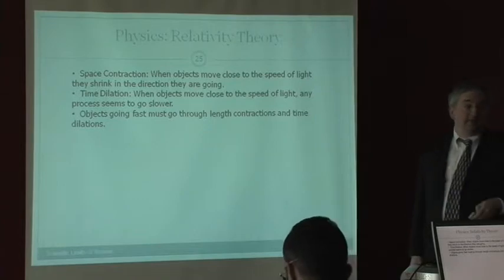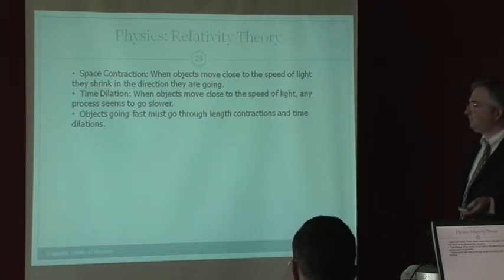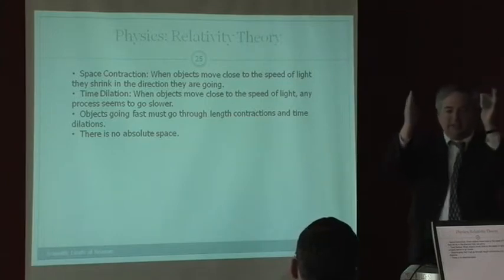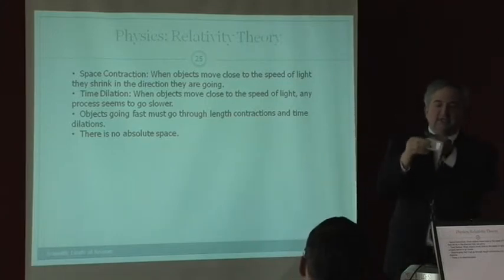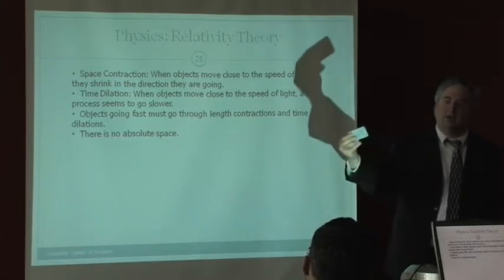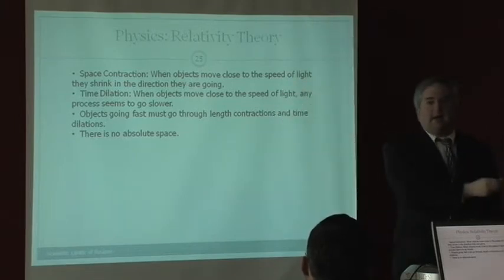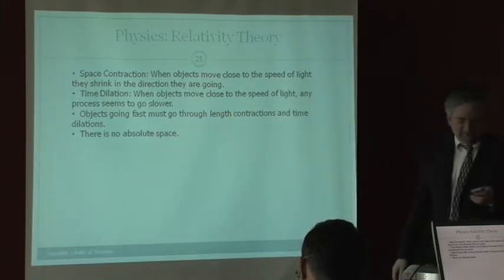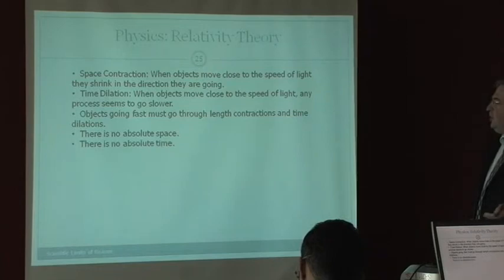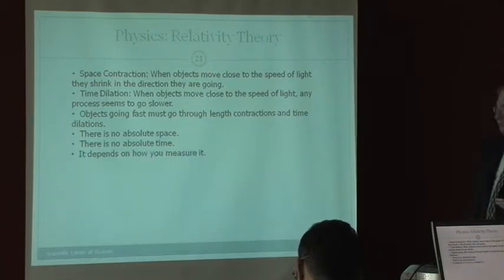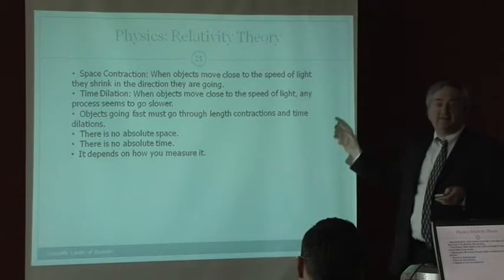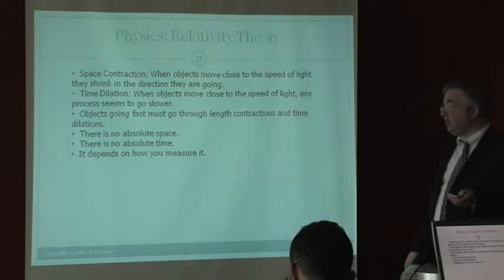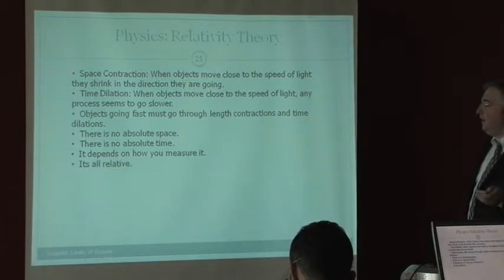Objects going fast must go, and by fast, I mean close to the speed of light, must go through large contractions and time dilations. Now, that's a shocking thing. There's no absolute space. There's no saying, this thing is exactly three inches long. It's not exactly three inches long, because I can move it very fast, and I'm shrinking it. When you move this, it shrinks very small, but it does. There's no absolute time. It depends on how you measure it. So whether or not something goes fast or slow, depends on how fast you measure it. And it's a shocking thing. It's all relative.